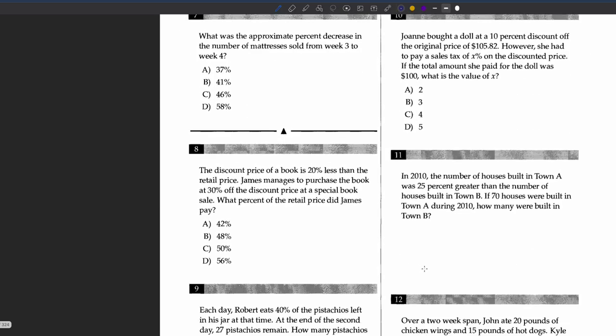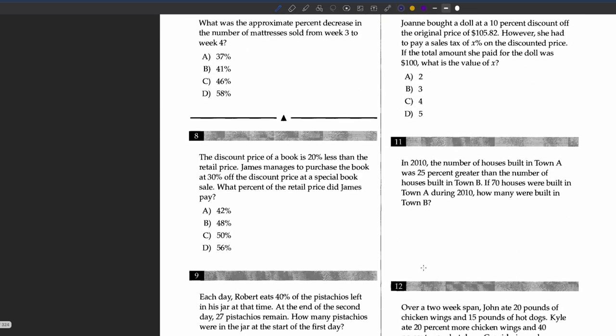Question eight: The discount price of a book is 20 percent less than the retail price. James manages to purchase the book at 30 percent off the discount price at a special book sale. What percent of the retail price did James pay?